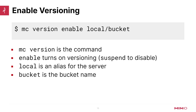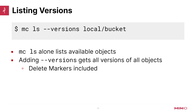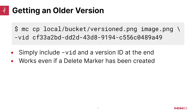To list your versions, you pass the --versions flag to the mc ls command, using your alias and bucket name. The delete markers will be included, and this is how you can find a delete marker and remove it. If you want to download an older version, you use the mc cp command with a version ID to get a specific older version of a versioned object. Even if a delete marker has been created, downloading an actual version will still work — your versions are always still there, even if you do a delete.